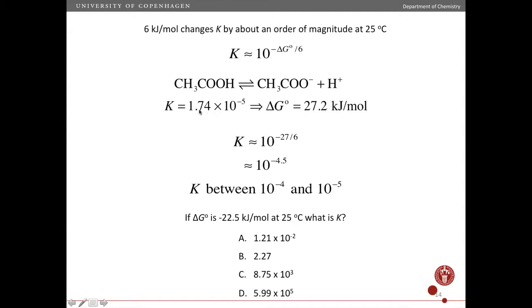Right? And in fact it is. It's 1.74 times 10 to the minus fifth. It's a little bit bigger than 1 times 10 to the minus fifth. Okay so this is a very useful way of estimating the size of either delta G standard or K.